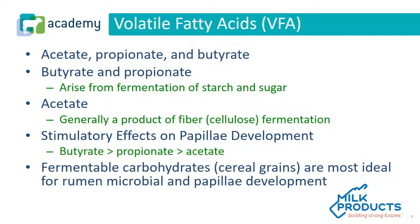Butyrate and propionate arise from the fermentation of starch and sugar. Acetate is generally a product of fiber or cellulose fermentation. Volatile fatty acids have stimulatory effects on papillae, or absorptive functional surface development, in the rumen. Butyrate, propionate, and acetate all contribute to this.